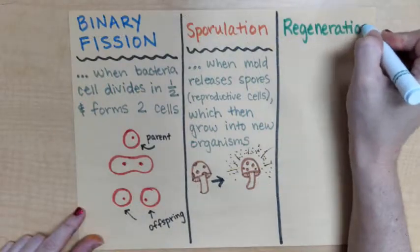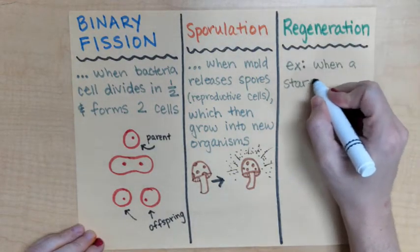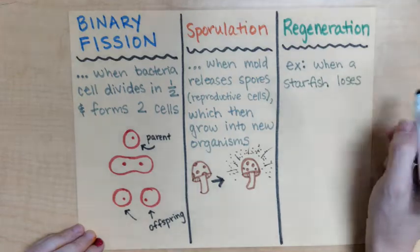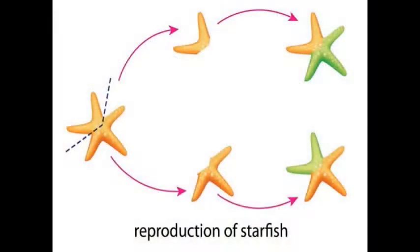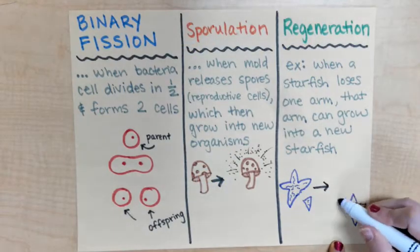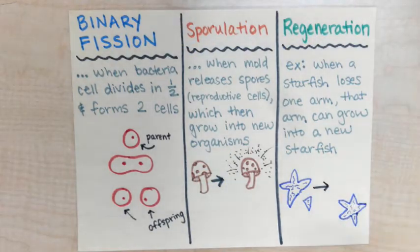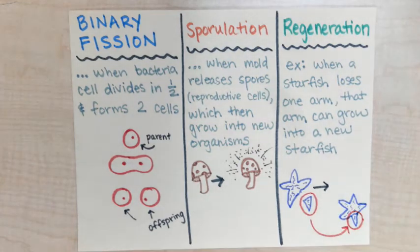A third type of asexual reproduction is regeneration. Take, for instance, a starfish. If a starfish happens to lose one of its arms, that new arm can actually grow back into its full starfish form.